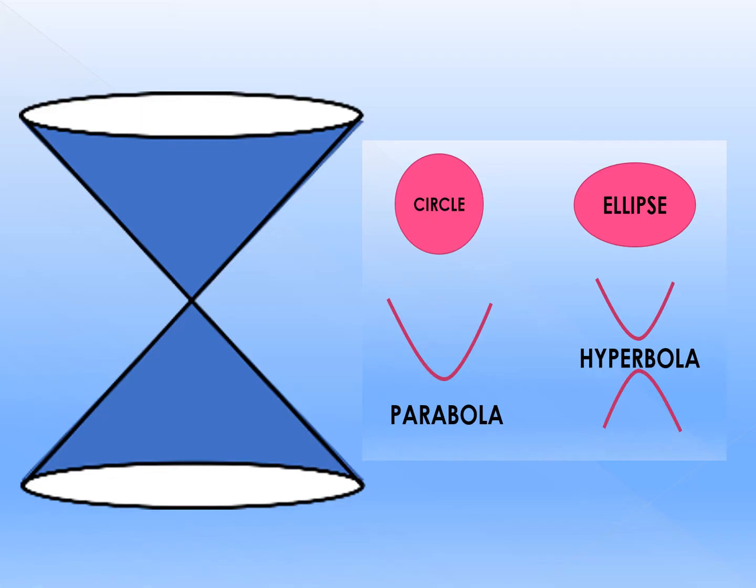This is the first question. If you will cut the double nappe cone using a plane figure horizontally, which of the following types of conic sections will be formed? Is it a circle, an ellipse, a parabola, or a hyperbola? Please write down your answer and later on we will be checking if your answer is correct or not.